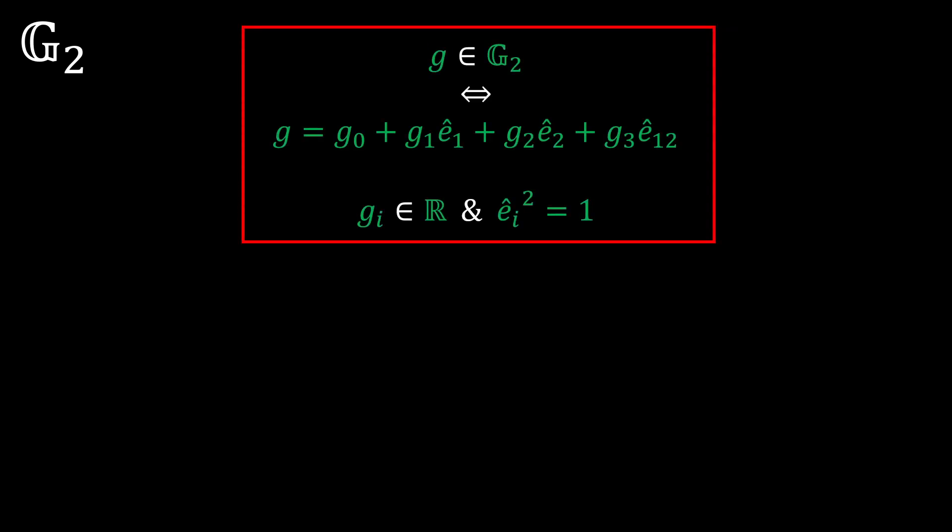Moving to the g2 algebra, we introduce two orthogonal unit vectors e1 and e2 which both square to positive 1. Any geometric number g in the g2 algebra has this form. Note that there is now a unit bivector which is generated by the unit vectors.